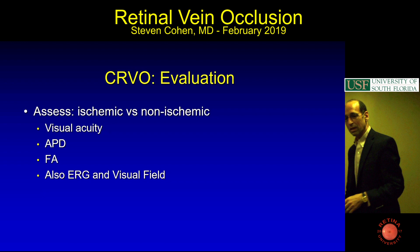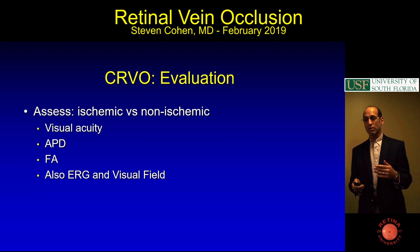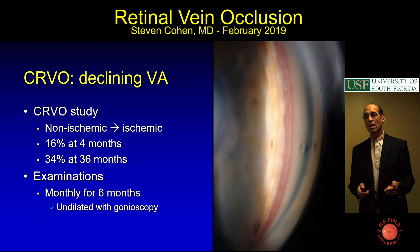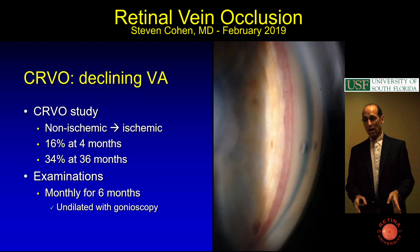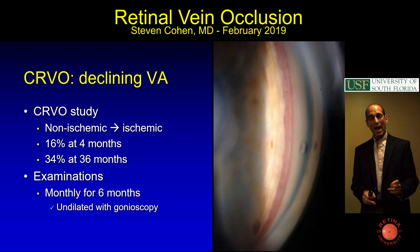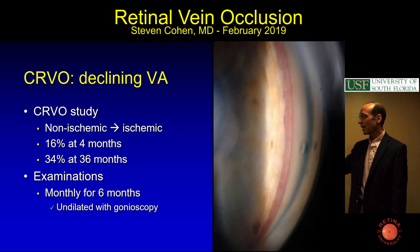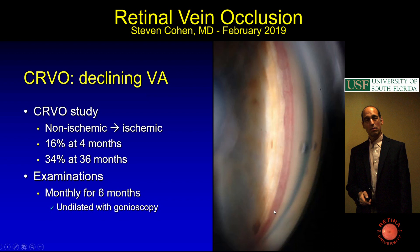APD is important, and if someone has declining vision with a central vein occlusion, they're likely going from non-ischemic to ischemic—16% convert at 4 months and 34% at 36 months. From the central vein occlusion study, you need to do monthly exams for 6 months undilated with gonioscopy. In one case there's neovascularization of the angle which you'd never see without gonioscopy. If they're starting to get neovascularization of the angle, you need PRP for the central vein or start anti-VEGF injections.